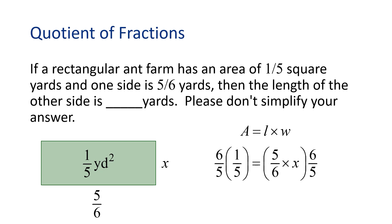The fractions on the right-hand side of the equation will clear out or cancel. And after we multiply on the left, we're going to get that x equals six twenty-fifths. The width of the ant farm is six twenty-fifths yards. Nice job!